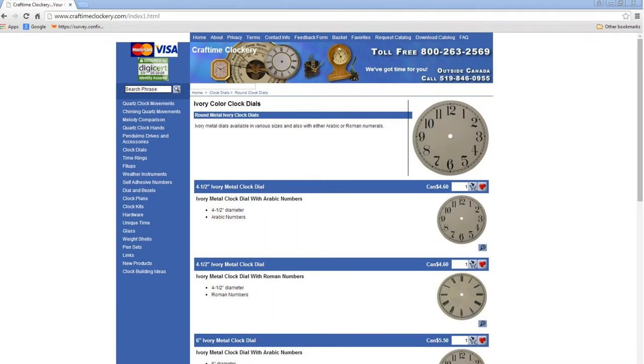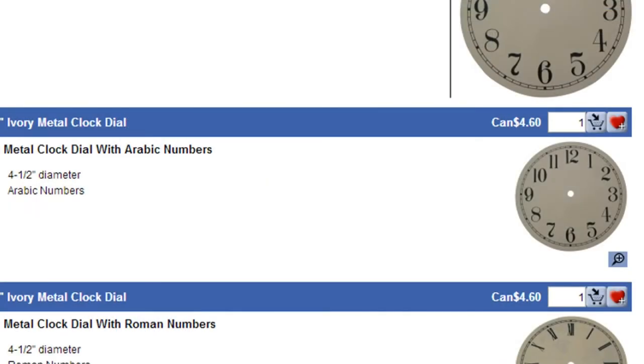You know, I make these workshop videos as I go along here and that probably explains why sometimes they're a little bit disjointed. Anyway, I was just on Craft Time Clockery's website here and I was looking at their little dials and I could have bought a little dial just exactly the right size for four dollars and sixty cents. You know, I'm probably going to end up spending four dollars or more on epoxy glue by the time I'm through.